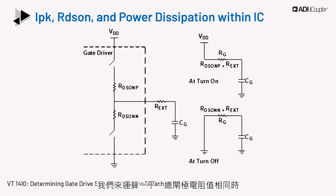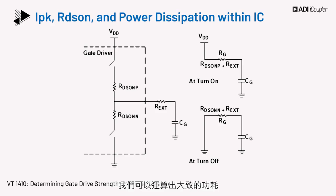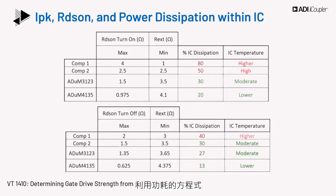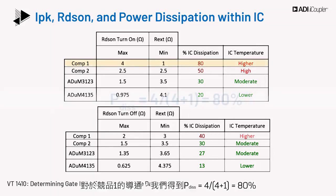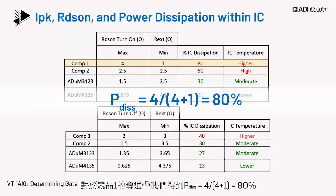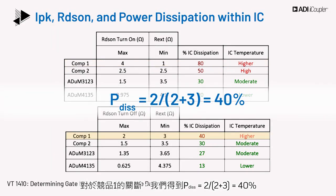Let's calculate the power dissipation with different drivers in an application when the total gate resistor value is the same. Disregarding the tolerances of external resistors and considering the max RDS on of the gate driver output stage MOSFETs, we can calculate approximate power dissipation. Using the power dissipation equation, we find the proportion dissipated within the gate driver. For the turn-on case with Competitor 1, P_dis equals 4 over (4 plus 1), giving 80%. For the turn-off case with Competitor 1, P_dis equals 2 over (2 plus 3), giving 40%. Similar calculations can be made for the power dissipation of other parts.